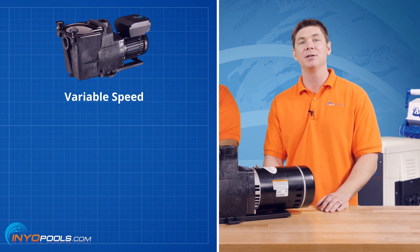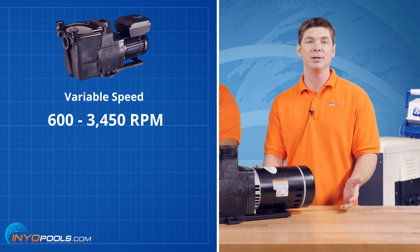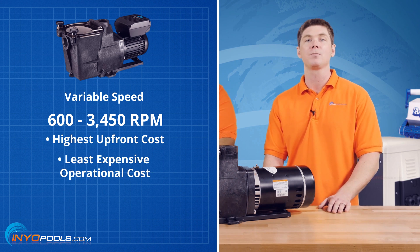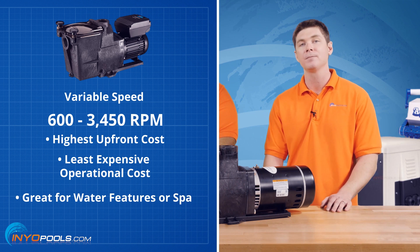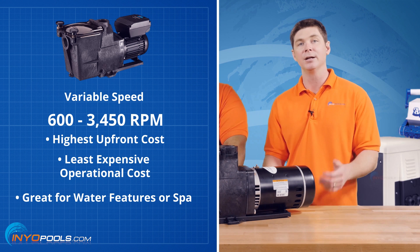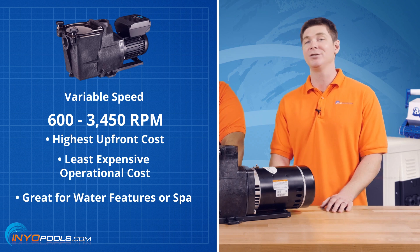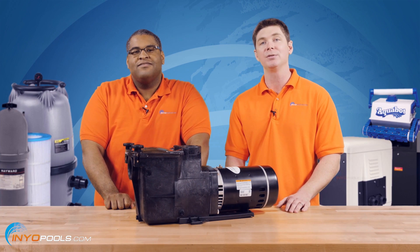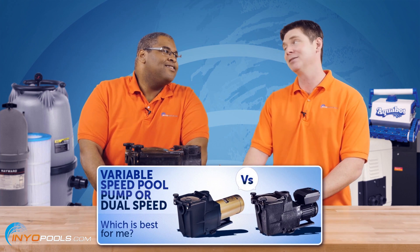Finally, we have the variable speed pump. It can operate at a full range of speeds from 600 RPM to 3,450 RPM. It has the highest upfront cost, but it's by far the least expensive pump to operate. This pump is great for situations where you have water features or a spa — for instance, you can run it at a low RPM to circulate water through the pool, kick it up to run a waterfall, and then all the way up to run massage jets in your spa. For more information on the differences between these pumps, check out our well-written blog.